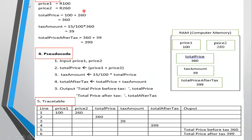For the specific example: price one is 100, price two is 260. The total price means we add both values — this helps you know the operation to use, which is addition. The tax amount is 15 percent, which is 0.15 times total price (360), giving 39 as the tax. Total price after tax is 360 plus 39, giving the total price after tax.